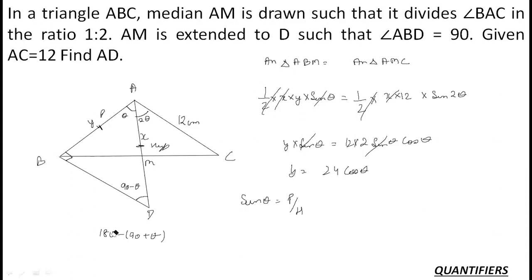Now sin theta, here sin theta, basically sin of 90 minus theta. Because here the theta of the angle is 90 minus theta. Sin of 90 minus theta is equal to the value which is 24 cos theta upon h, h is our AD. So AD is equal to 24 cos theta. And what is sin 90 minus theta? Sin 90 minus theta is cos theta. So basically cos theta, cos theta cancel out. AD will come out to be 24.